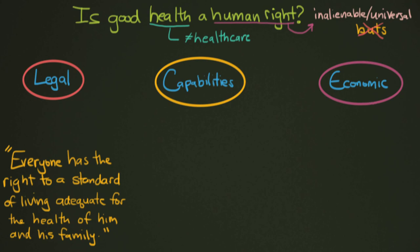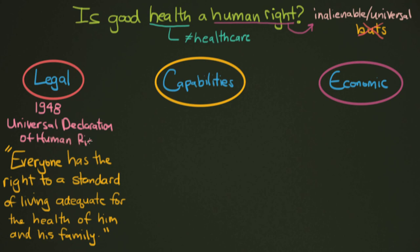The first big international argument about this came in 1948, where the world had just finished with World War II and was needing some sort of unifying documents — and lots of them were written at this time. One of them is the Universal Declaration of Human Rights. In it, they said in 1948: 'Everyone has the right to a standard of living adequate for the health of him and his family.' Obviously it's a little antiquated in its language — we've got 'him and his' — we probably wouldn't want to word it that way today, since women are just as important in this discussion.